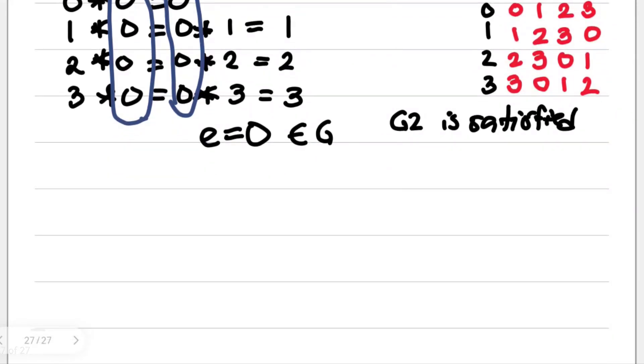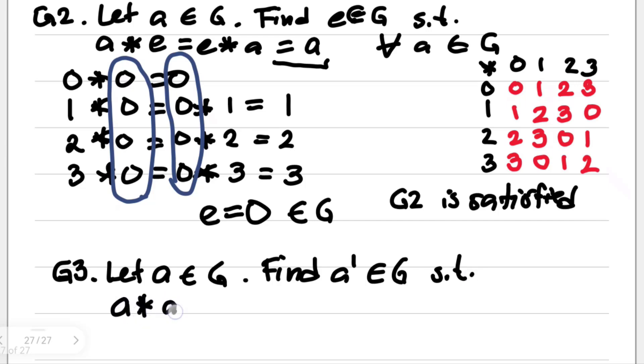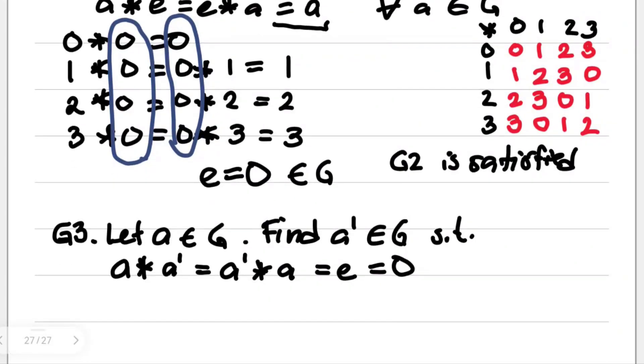Now let's have our last condition, our G3, which is the existence of our inverse. So let A element of G find the inverse which is also element of G, such that A star inverse is equal to A inverse star A equal to E, which is 0. Hence, we're just going to look for the pair for each element that when subjected to the operation, the result would be the identity element of 0. So we start here with 0 star 0, that's 0. For 1, we can get 0 here if 1 is to be operated with 3.